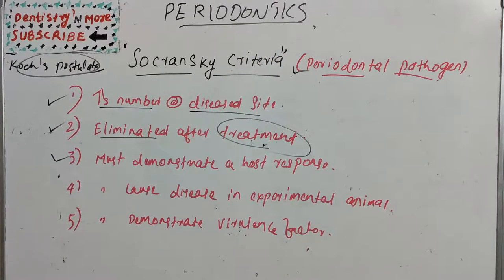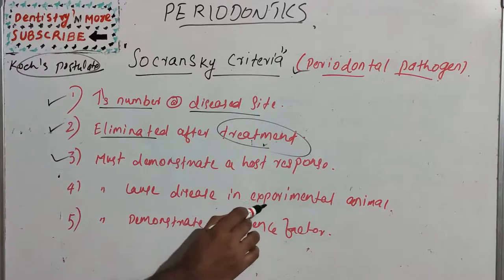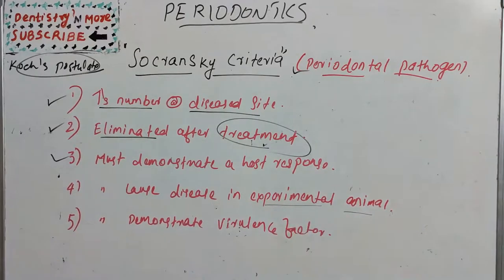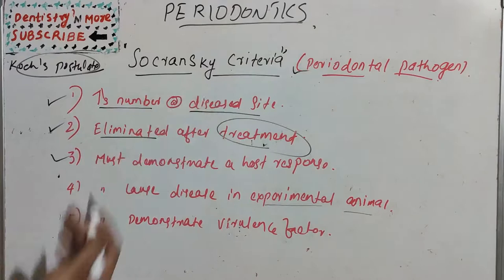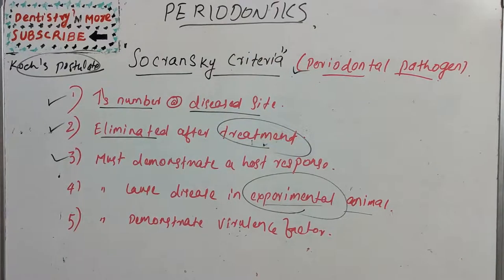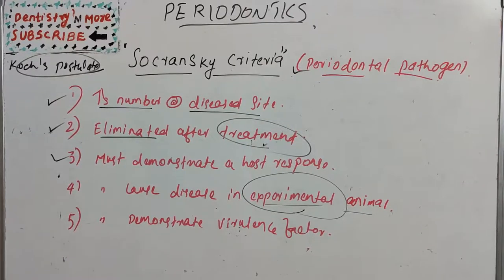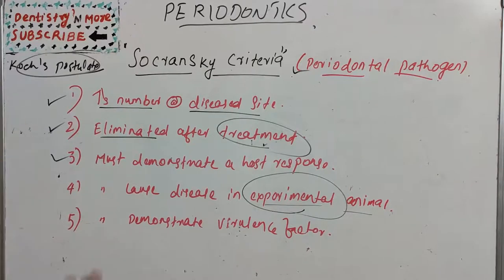The fourth criterion is that it must be capable of causing disease in an experimental animal model. If we can recreate the same disease in a sterile or healthy experimental animal — whether a rat, rabbit, or any other model — we can confirm it is a periodontal pathogen.